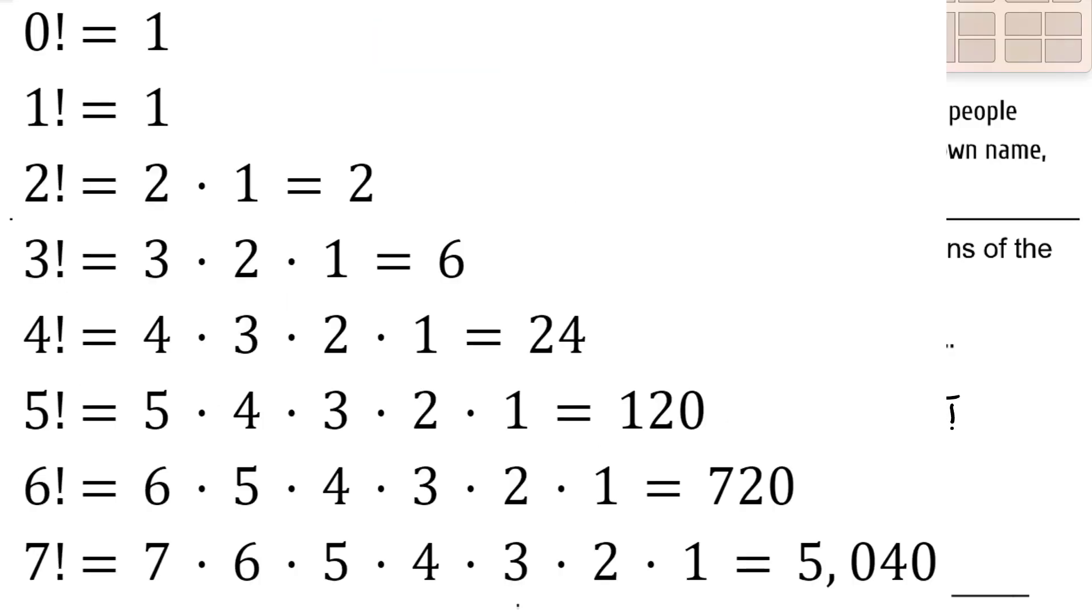If you remember from geometry, an exclamation point is a factorial. When you take a number as factorial, you're multiplying it by every consecutive integer below it. So 5 factorial would be 5 times 4 times 3 times 2 times 1. 7 factorial would be 7 times 6 times 5 times 4 times 3 times 2 times 1. Based on real-life application of counting principles, 0 factorial is not 0, it is 1.